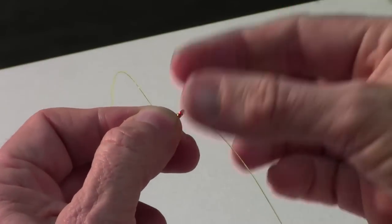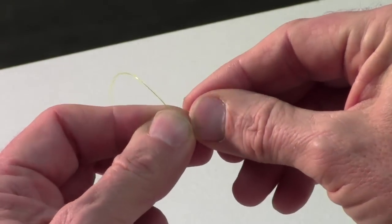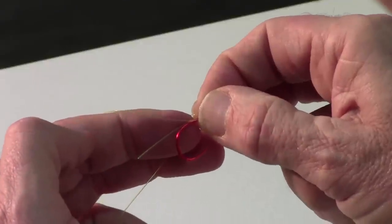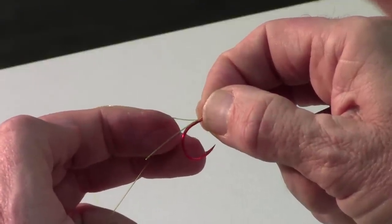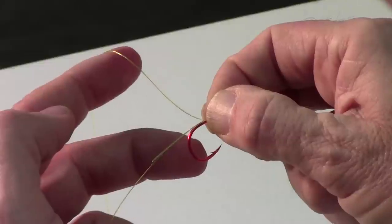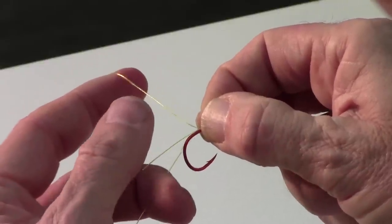Now once again I'm going to take my right hand and I'm going to transfer over and I'm going to grab that line that I just ran through and I'm going to hold that up against the shank of the hook.